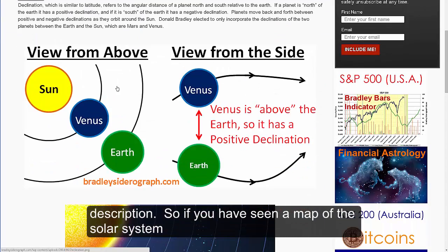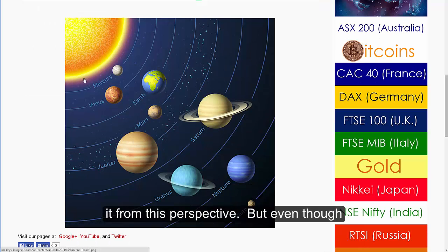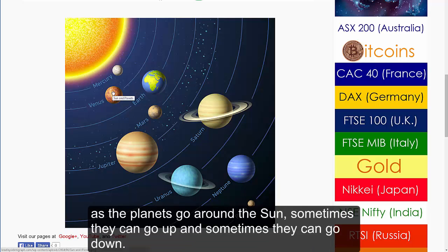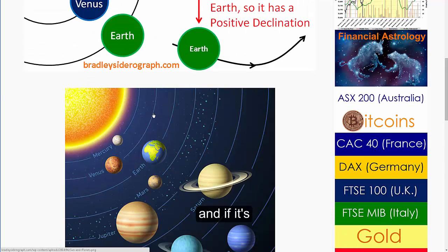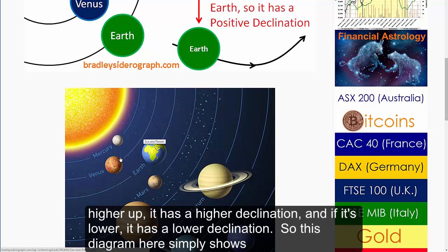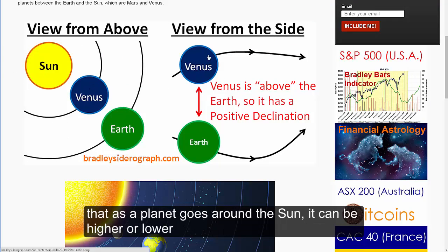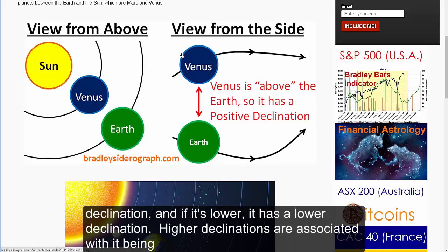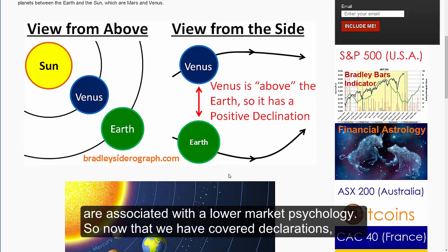If you've seen a map of the solar system, you'll frequently see the sun in the middle and the planets — Mercury, Venus, Earth, Mars, Jupiter, Saturn, Uranus, Neptune, Pluto — shown from that perspective. But even though it might look like the planets are all in a straight line, as the planets go around the sun, sometimes they can go up and sometimes they can go down. Venus, for example, instead of being at the exact same level, actually goes up a little bit and goes down a little bit as it goes around the sun. If it's higher up, it has a higher declination; if it's lower, it has a lower declination. Higher declinations are associated with better market psychology, and lower declinations are associated with a lower market psychology.